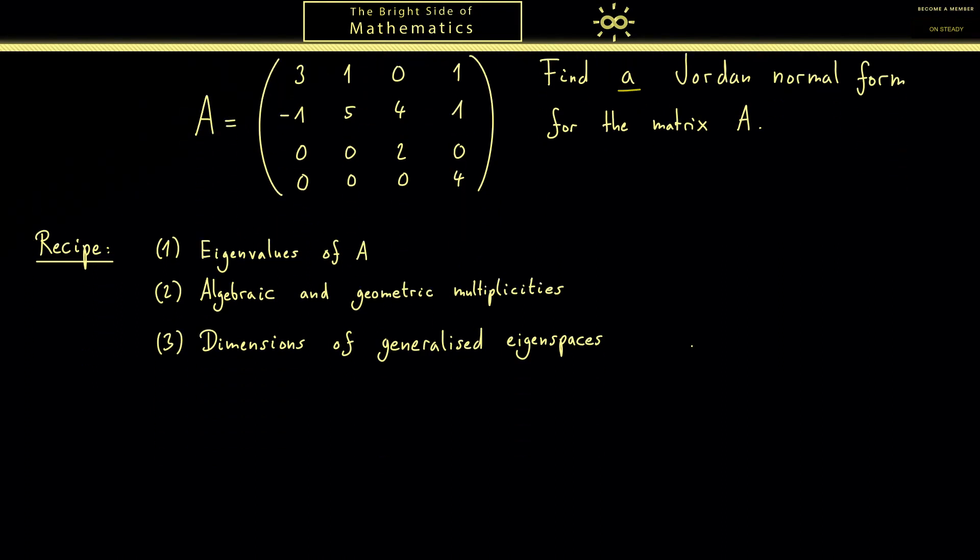Then let's start by calculating the eigenvalues. For getting the eigenvalues you have to look at the zeros of the characteristic polynomial, which is the determinant of A minus lambda times the identity matrix. The fancy 1 here denotes the 4 times 4 identity matrix in this case. So here we can copy the matrix A. Don't forget we need the matrix A and subtract lambda on the diagonal, which means here is 3 minus lambda, here is 5 minus lambda, 2 minus lambda, and here is 4 minus lambda. For this matrix we want to calculate the determinant.